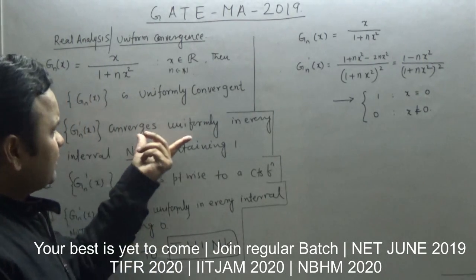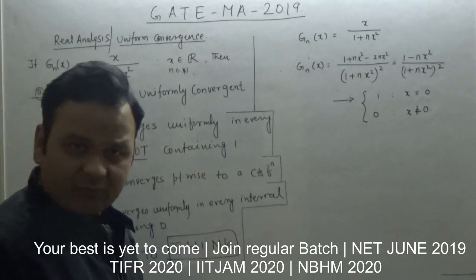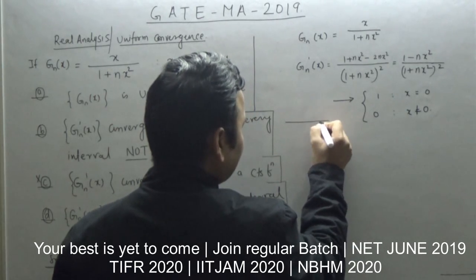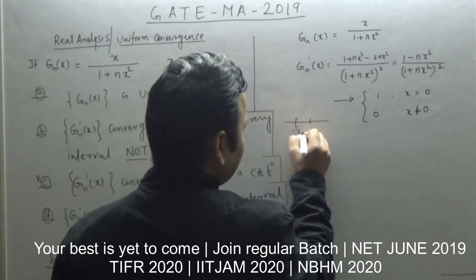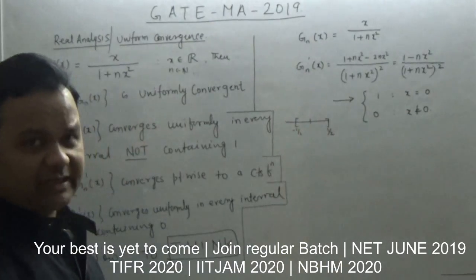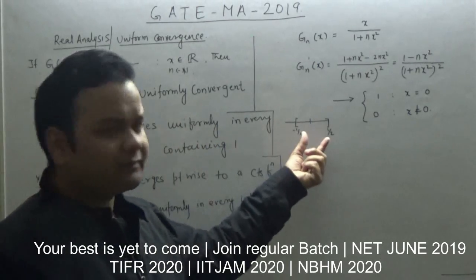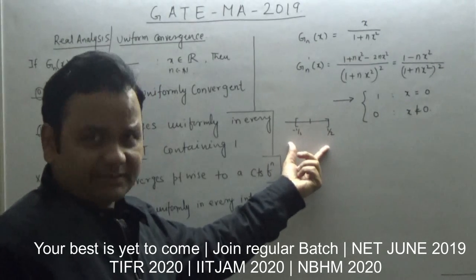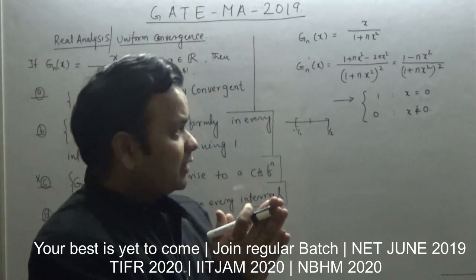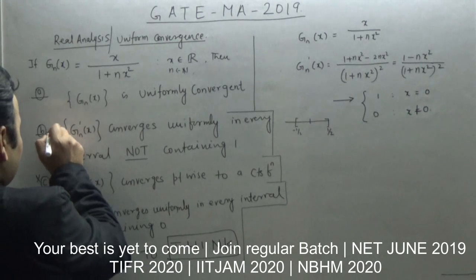Option B says g_n' converges uniformly in every interval not containing 1. Consider the interval (-½, ½), which does not contain 1. If g_n' converged uniformly on this interval and each g_n' is continuous, then by the uniform convergence theorem the limit function must be continuous. But the limit function is discontinuous, hence convergence is not uniform. So option B is also false.